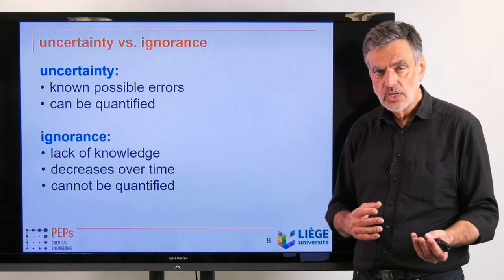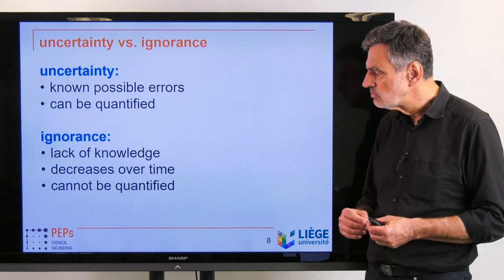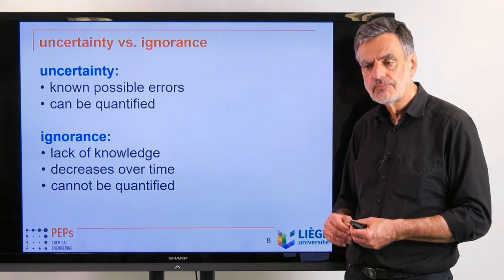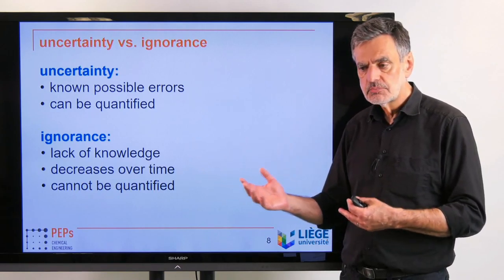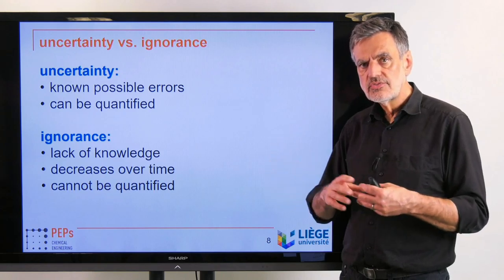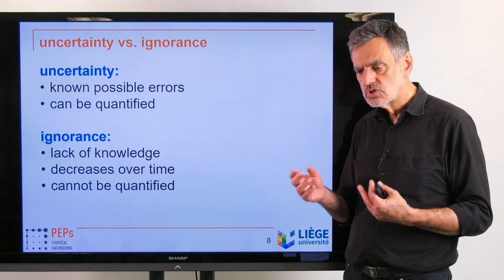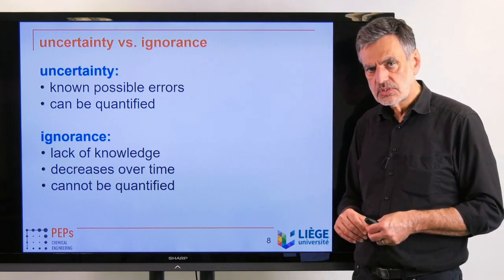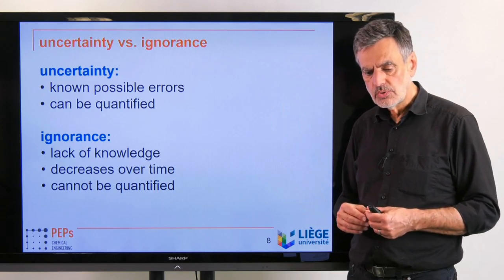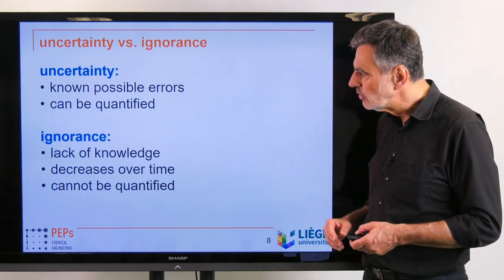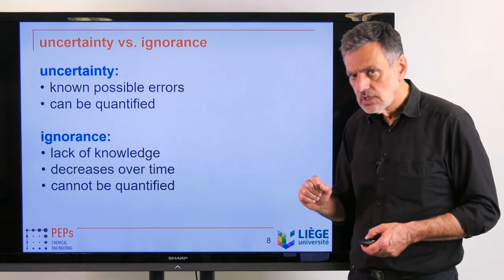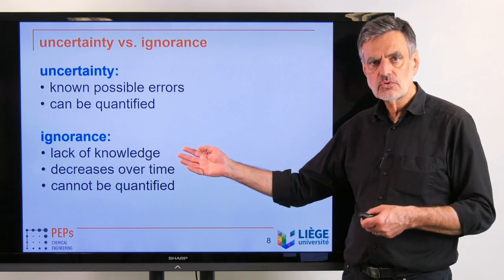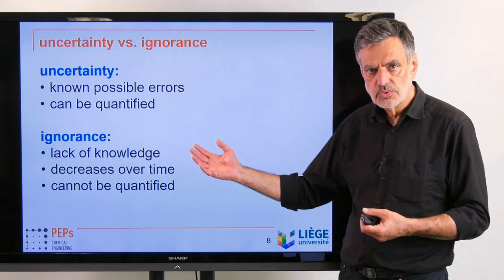The second aspect is so-called ignorance — a lack of knowledge. We do not know how the future will develop. That ignorance will decrease over time as we approach a given point in time, and unfortunately it cannot be quantified. In principle it cannot be quantified.